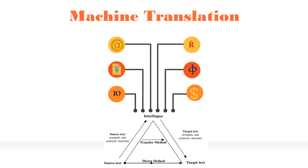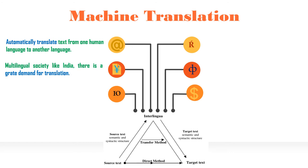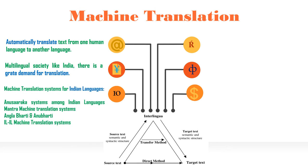Machine translation automatically translates text from one human language into another. In a large multilingual society like India, there is a great demand for translation of documents from one language to another. Machine translation is the application of computers to translate text from one natural language into another. Various machine translation systems have been developed in India, such as machine translation systems for Indian languages.